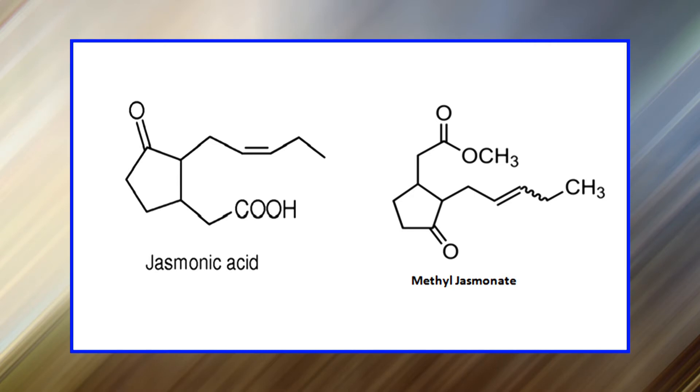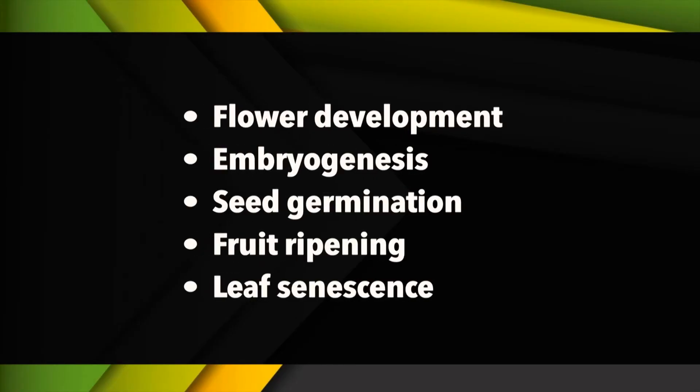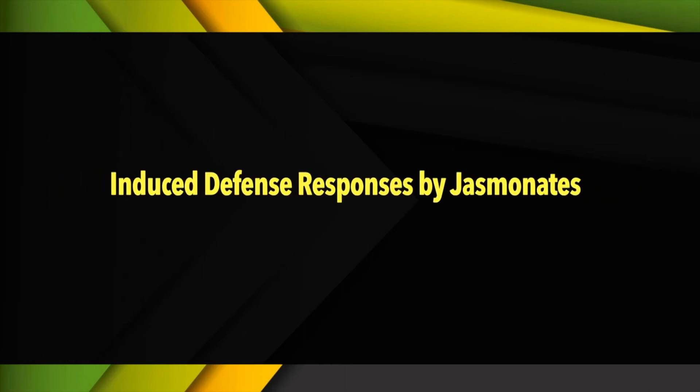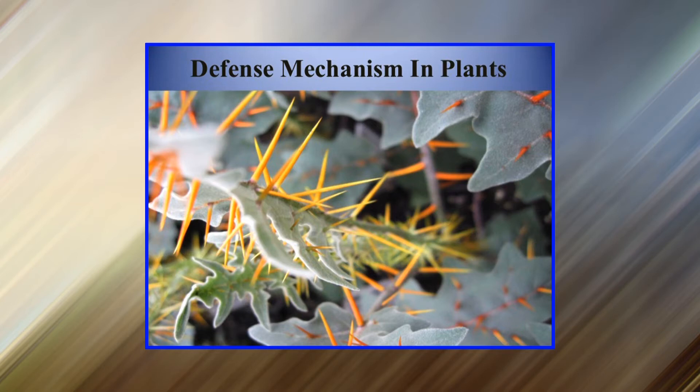It has been established that jasmonic acid and its methyl ester, methyl jasmonate, together referred to as jasmonates, are key regulators in the development, physiology, and defense of plants. Jasmonic acid accomplishes unique roles in plant developmental processes and defense. It regulates flower development, embryogenesis, seed germination, fruit ripening, and leaf senescence. Interestingly, jasmonic acid also accumulates when plants are subjected to UV light or elevated temperature, underscoring its central role in deterrence of both biotic and abiotic cues.